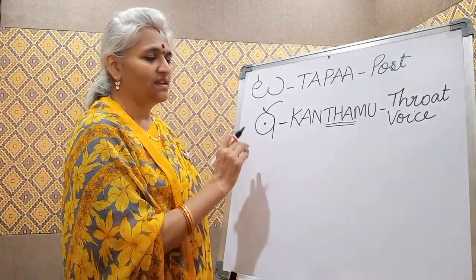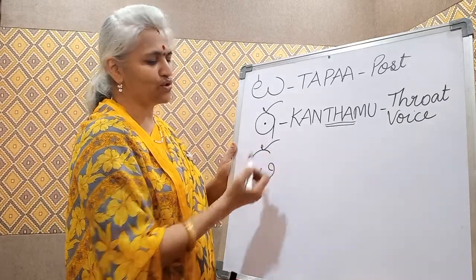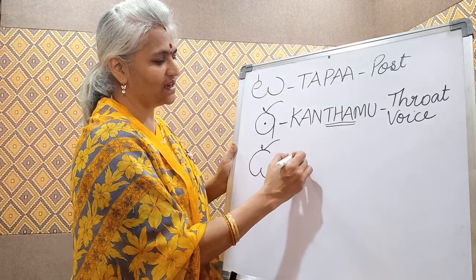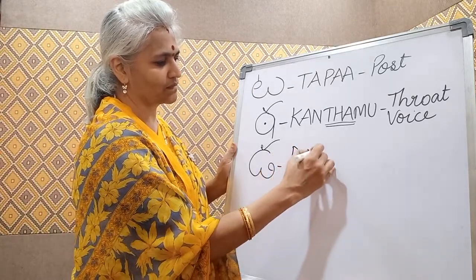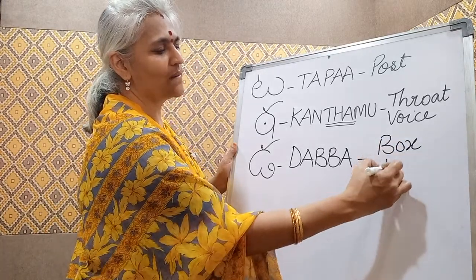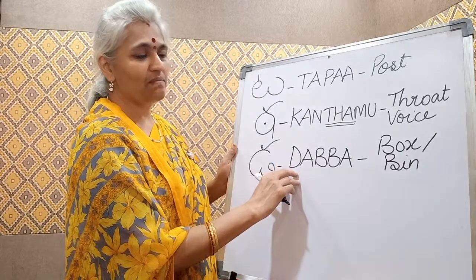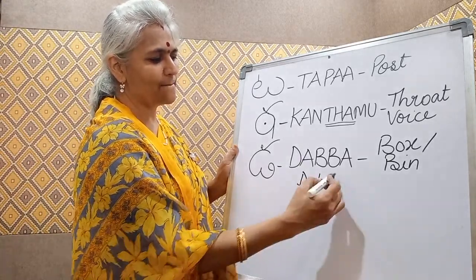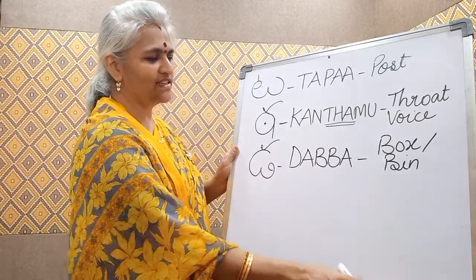The next one is DA, the Alpa-Pranam DA. You write it exactly like OO and put a tick on top — you don't put a sleeping line or a standing line, just an OO and a tick on top. An example word is DABBA. DABBA means a box or a bin. Note that many people may say DABA, but here we are saying DAB and then BA — DABBA — there is a stress on BA.